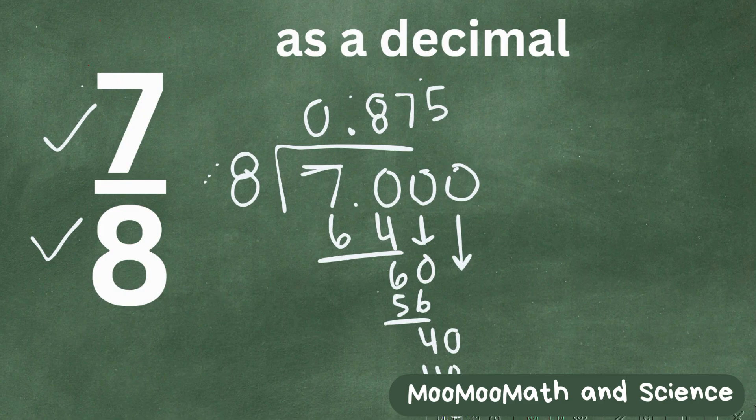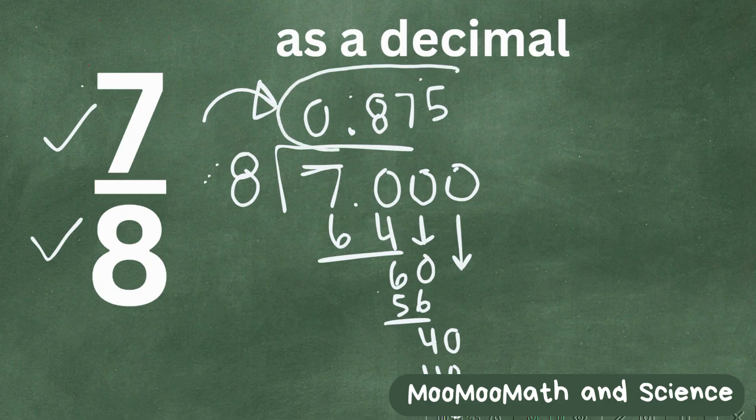So 7/8 as a decimal is 875 thousandths. I hope that was helpful.